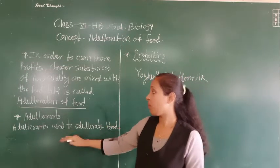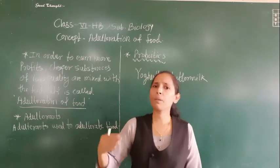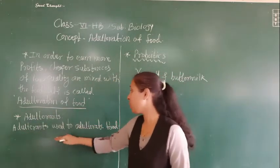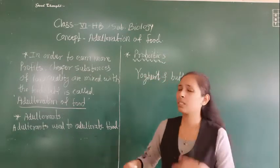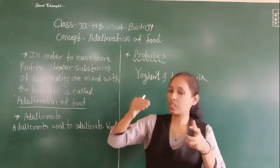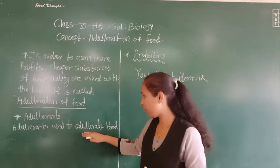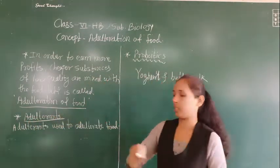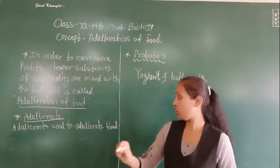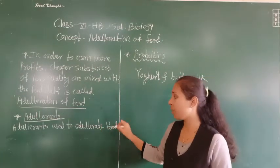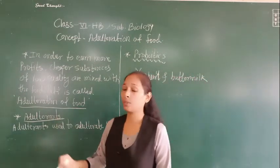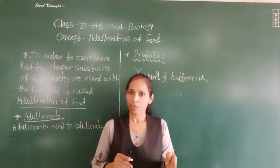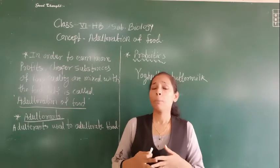The next concept is the adulterant. The adulterant is the substance which is used to adulterate the food. So the substance that is used to adulterate food is called an adulterant. For example, if you are having tea powder that we usually use, in some cases what happens is that someone adds sawdust into it.